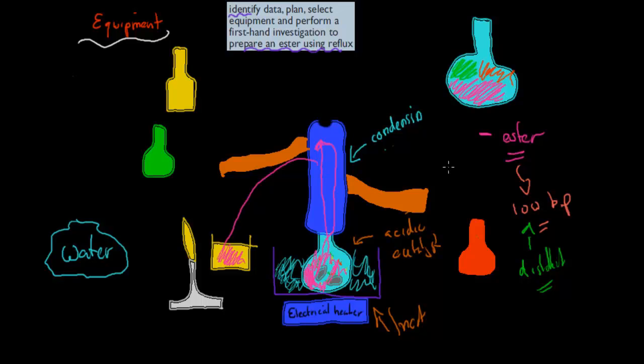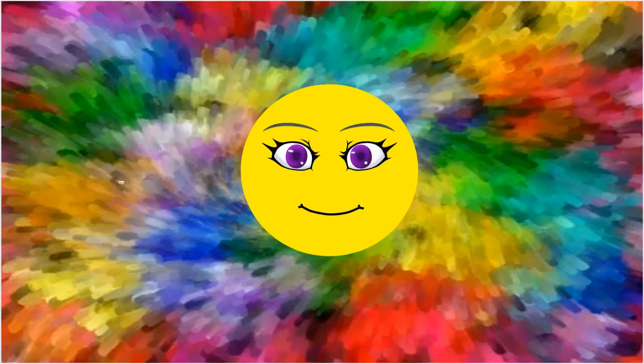But I'll go over the whole point again. Identify data, plan and select equipment and perform a first-hand investigation to prepare an ester using reflux. This was the equipment you used, something similar. Remember the equipment you used, because there's actually a relatively big chance that you might get a question either in an HSC exam or in your trials or anywhere else that asks you to actually set up, theoretically, what equipment you used to set up an experiment. Note down what you used in your experiment and know why as well. And know that it's a very risky procedure. This has a relatively high risk because the esters are explosive. And that's why we use the boiling chips. And that's why we don't use a naked flame in many cases. Just to decrease the risk of it exploding more or less. I hope that was useful. Thank you for watching.